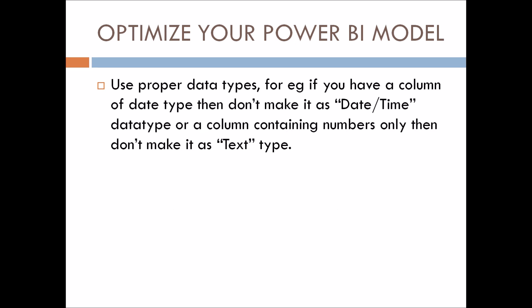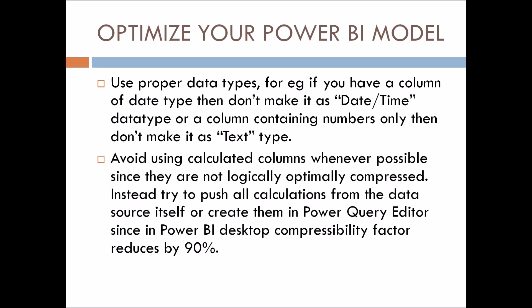The next point is to use proper data types. For example, if you have a column of date type, don't mark it as date/time — only mark it as date. Another example: if you have a column like Name ID that contains numbers but its default data type in Power Query editor is text, you should convert it to whole number. The compressibility factor for numbers is much greater than for text data types, so converting improves model size and performance.